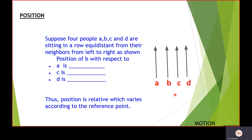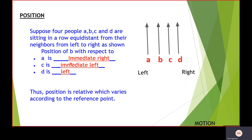What is the position of B with respect to A? So the position of B with respect to A is immediate right. The position of B with respect to C is immediate left and the position of B with respect to D is left. Let's check our answers. I hope we have written this.